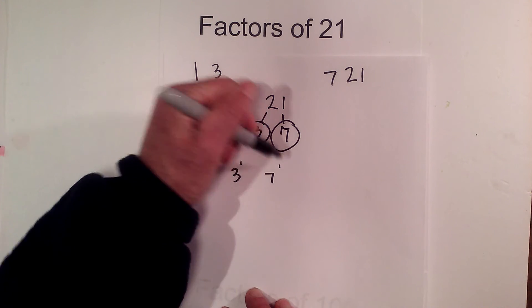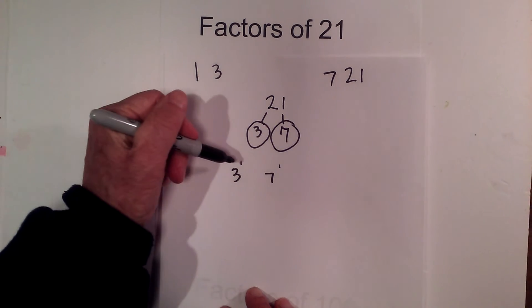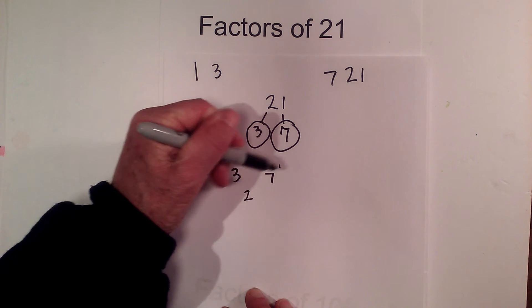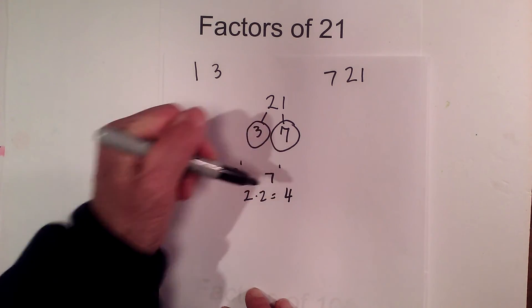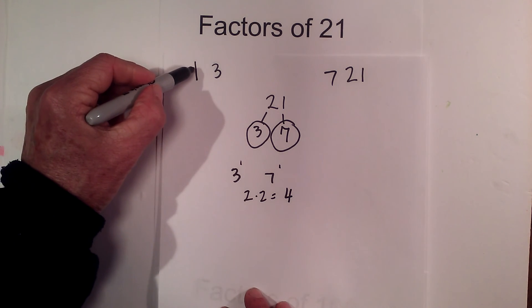So the prime factors of 21 are 3 and 7, and you can write these 3 to the first, 7 to the first. Now here's a trick to see if I have all the factors: you can add 1 to the exponent and multiply those. So 1 plus 1 is 2, 1 plus 1 is 2. If I multiply that equals 4, so 21 should have 4 factors, and if I count them, 1, 2, 3, 4.